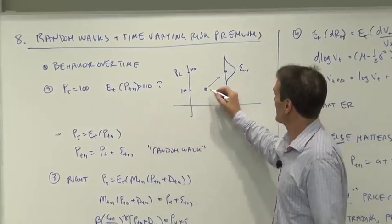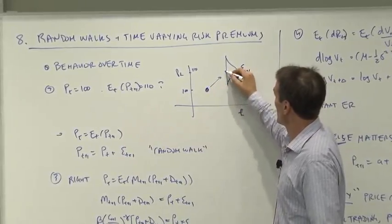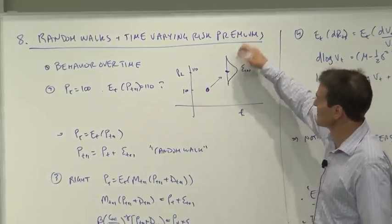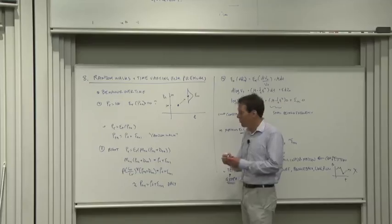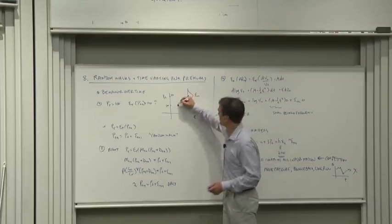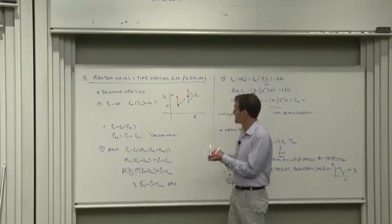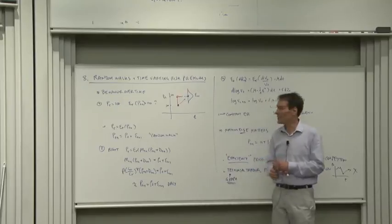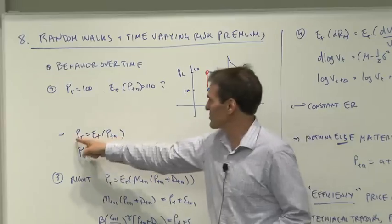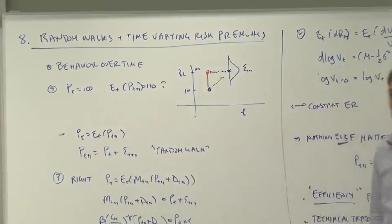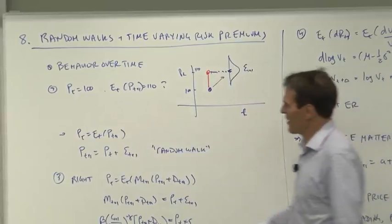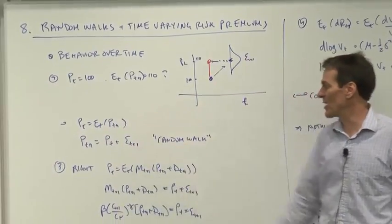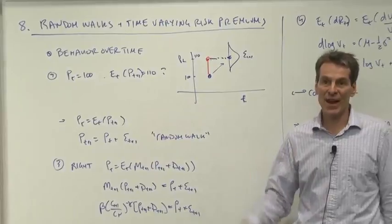Now what happens if everybody tries to buy? Price is at 100, everyone expects 110 tomorrow. There's some distribution tomorrow, but the expected value is 110. Well, if everybody tries to buy today, of course they're going to drive the price up today — right about until today's price is equal to the expected value of where it will be tomorrow. So competition should drive today's price to the expected value of tomorrow's price. Turning that around, tomorrow's price should be equal to today's price plus some unforecastable shock. Prices should follow a random walk.